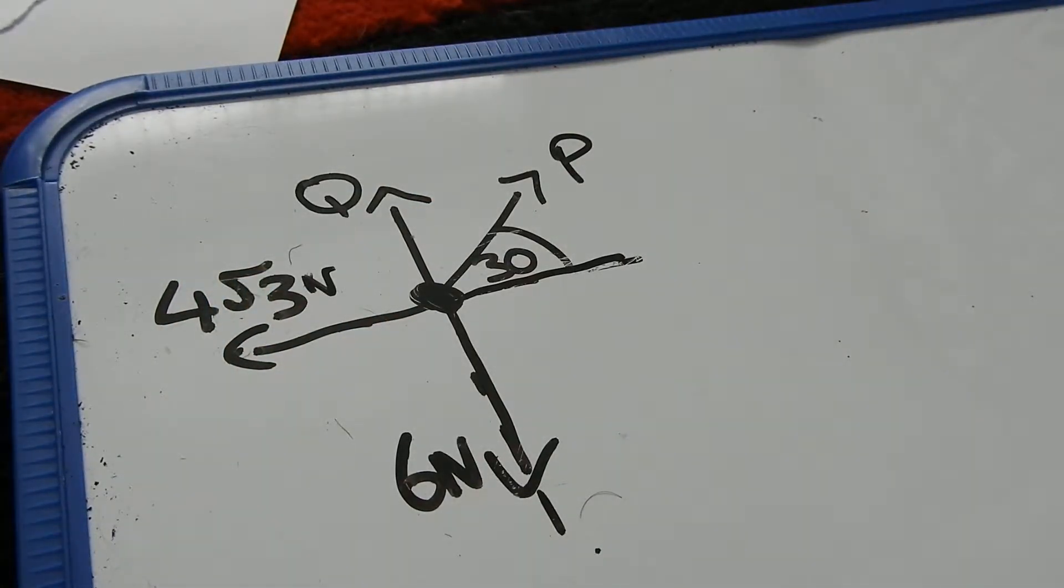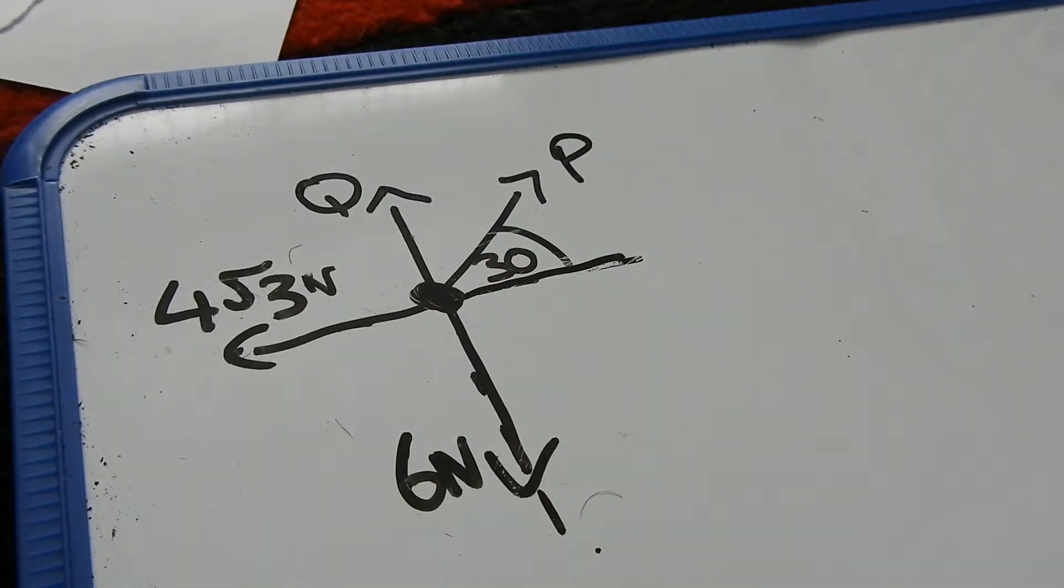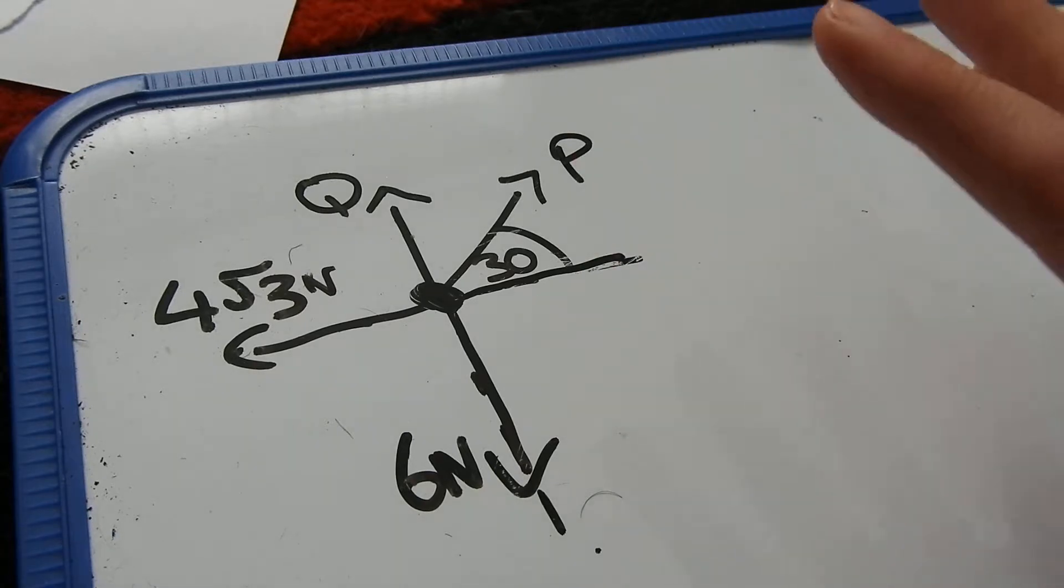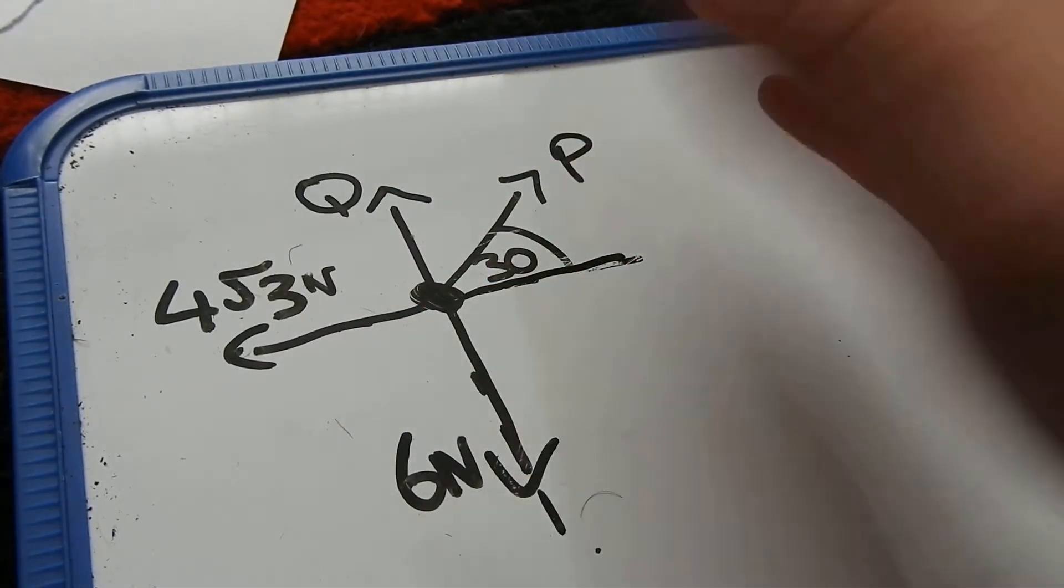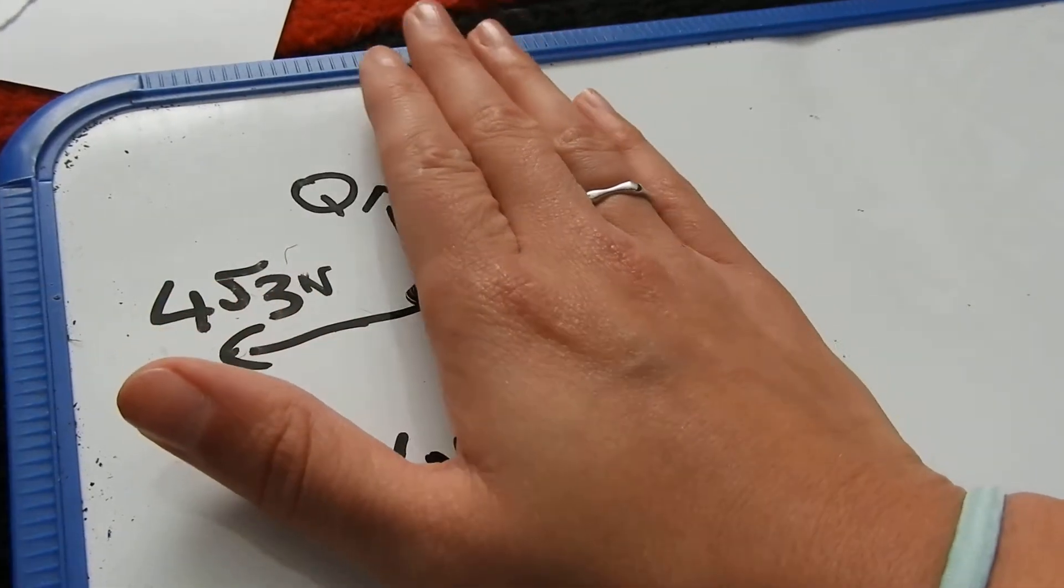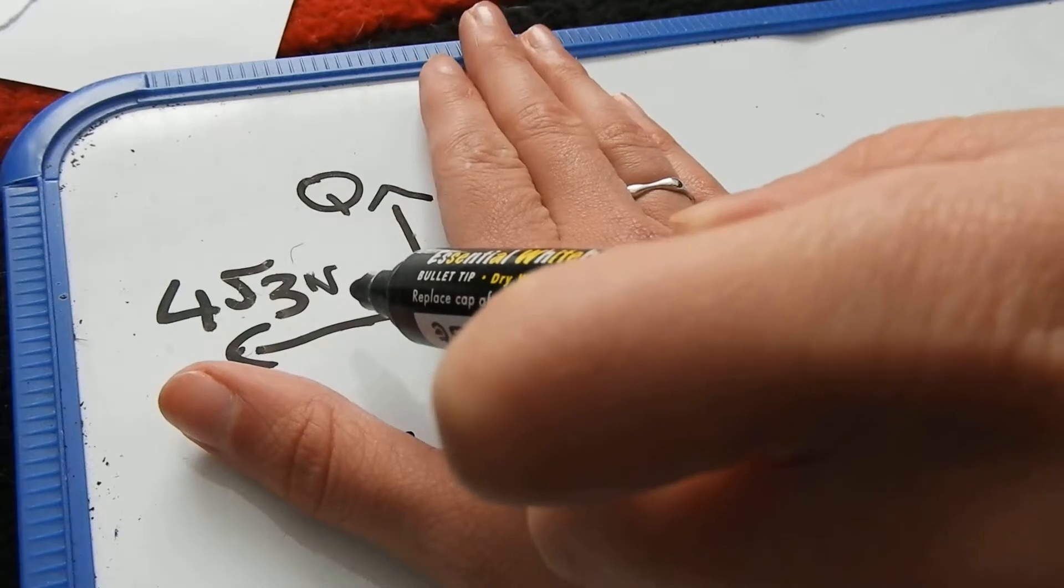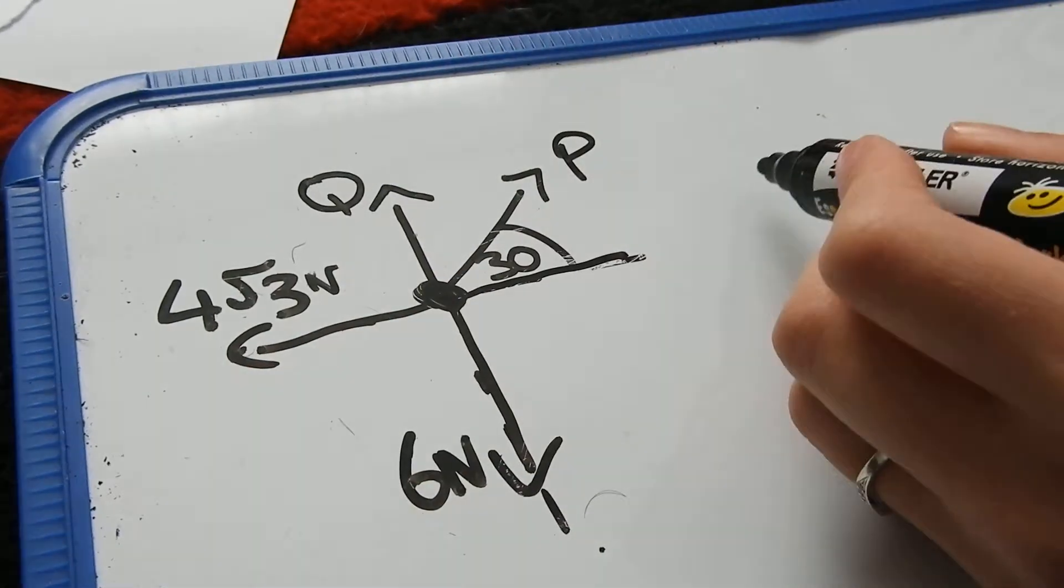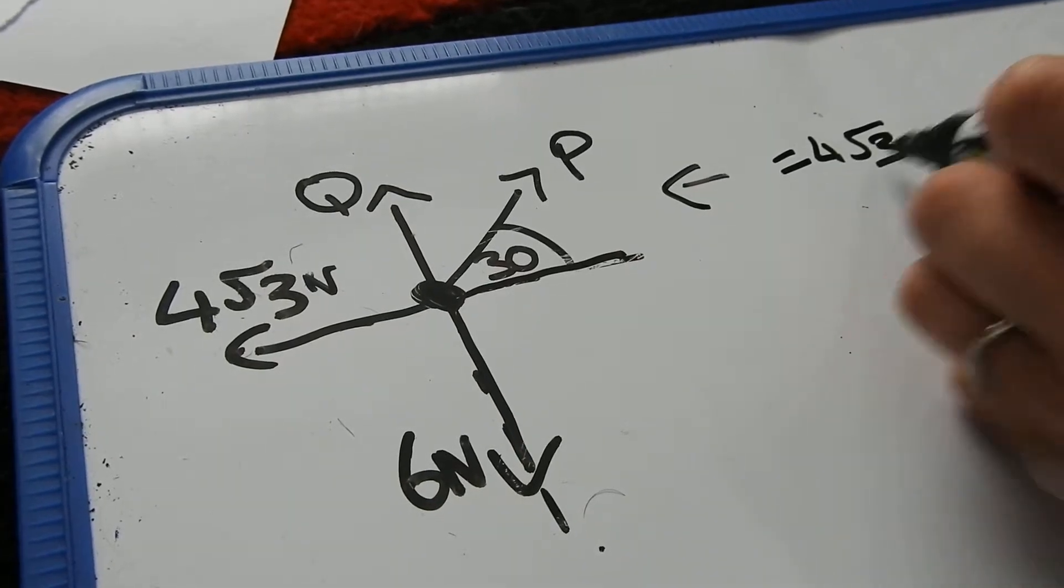It wants us to first of all obtain an equation in the horizontal direction. So I think the easiest thing to do is just break it down into different quarters here and just look at what's going on. So if I cover this up and I look at the first quarter, going to the left, we have 4 root 3. So I'm going to write, going to the left, we have 4 root 3.